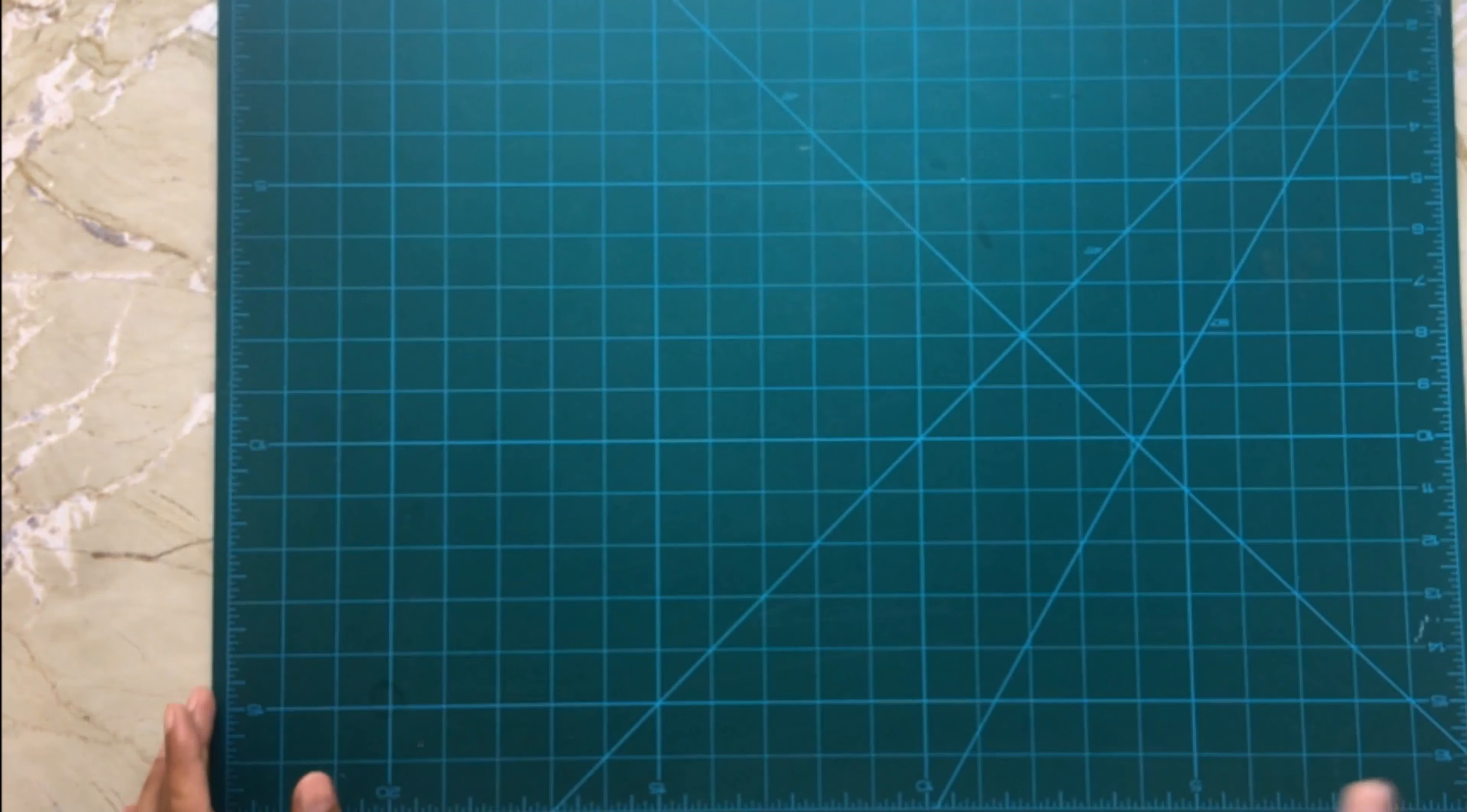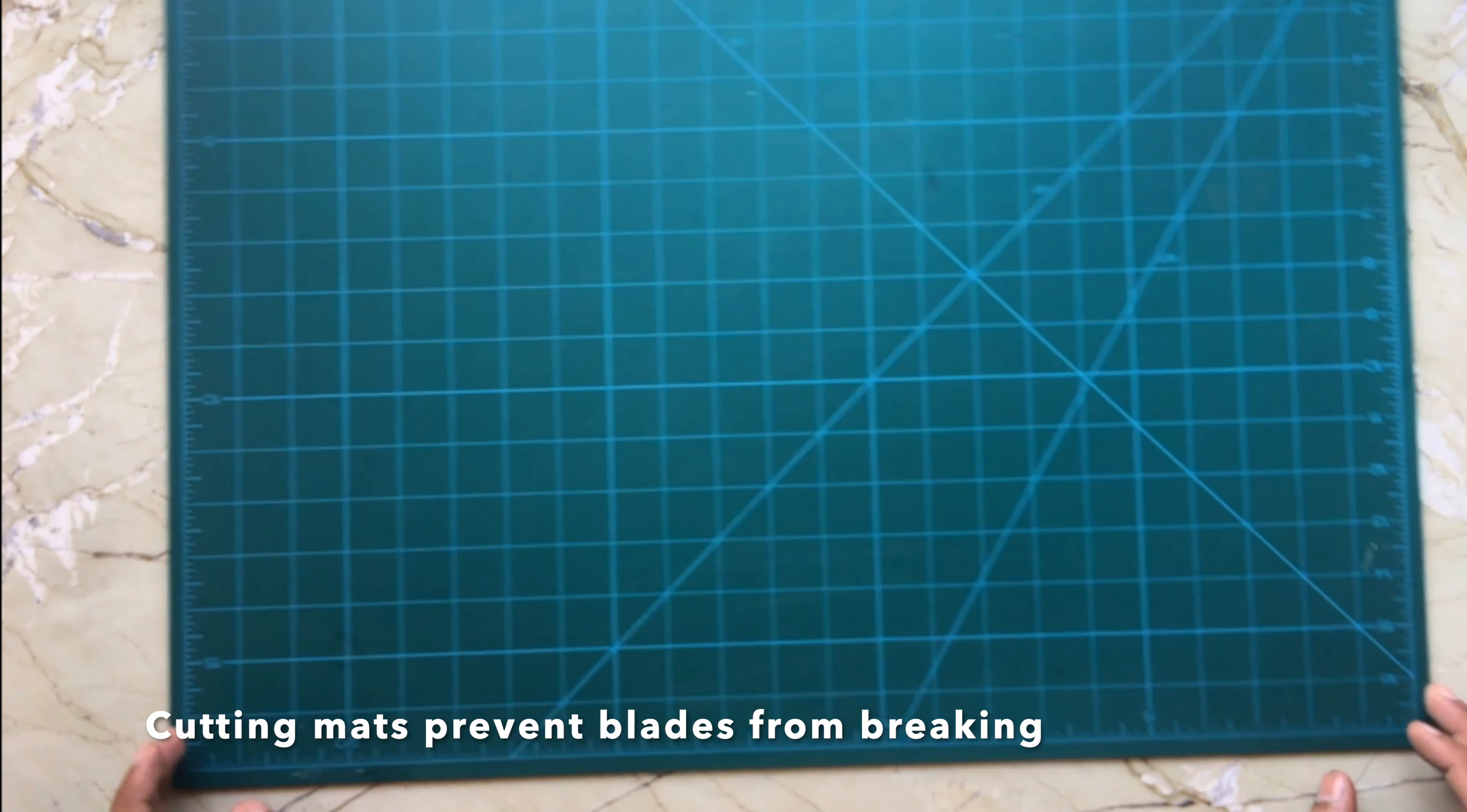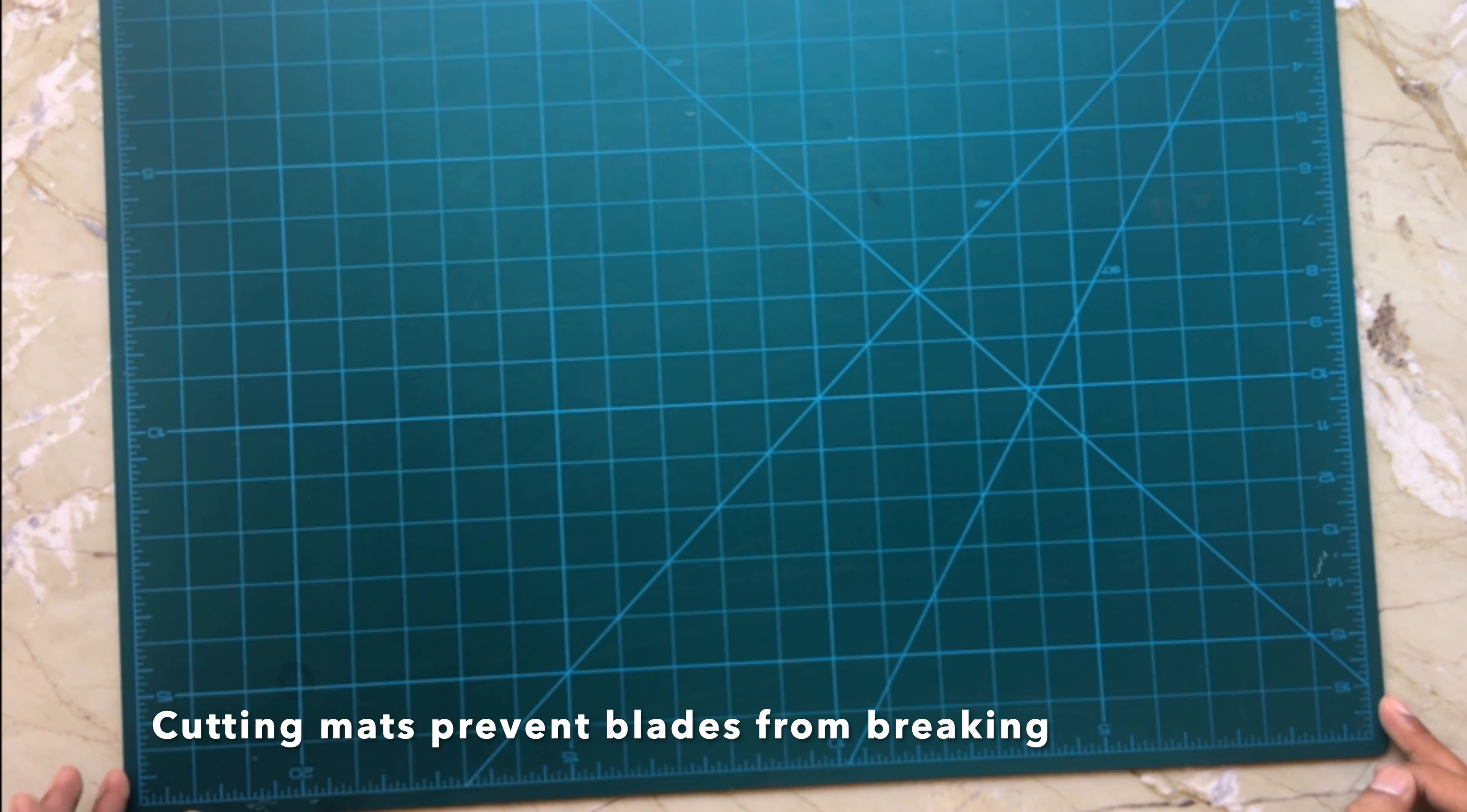And lastly, the A2 size cutting mat, which is the largest cutting mat that I have. It is perfectly suited for my A3 and A4 designs as it allows me to rotate the paper seamlessly without any interruption in the paper cutting.